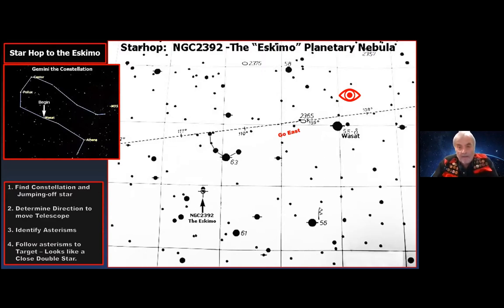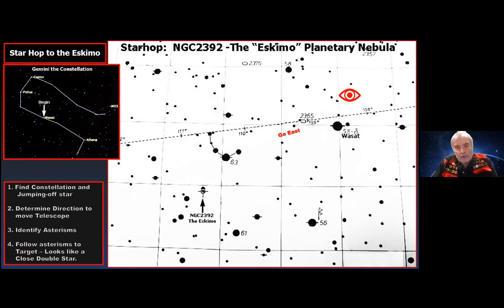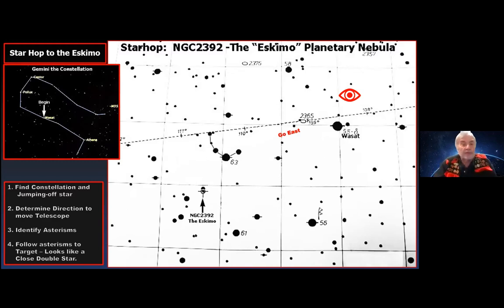The first thing you do is find a naked eye star and hop off from that. Start off with a bright naked eye star — you can't go wrong. Then determine if you're going to go north, south, east, or west from that star. On star charts: go left and you're going east, go right you're going west, up is north, down is south. Determine which direction to move your telescope and go to your first target — whether that's an asterism or the object you're looking for.